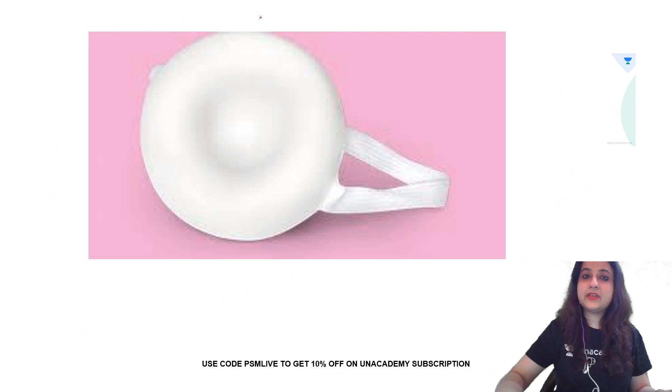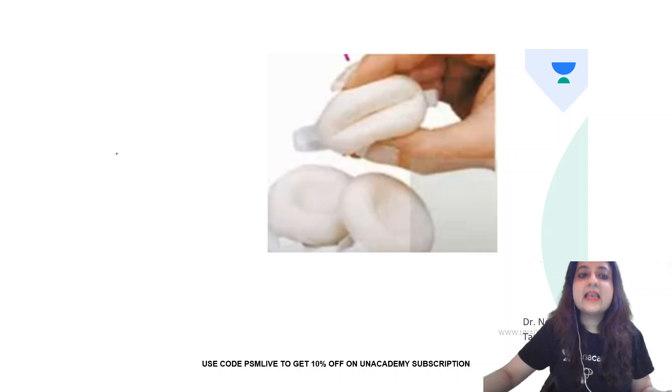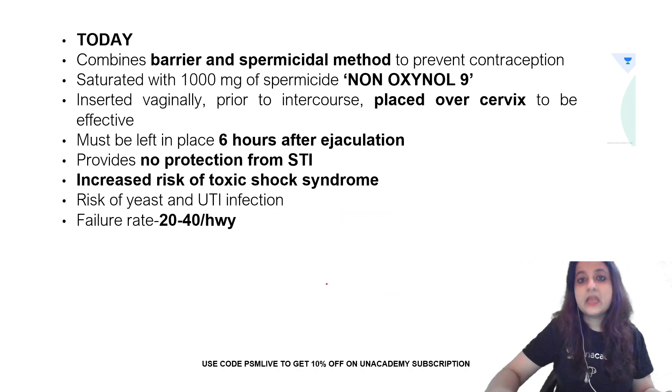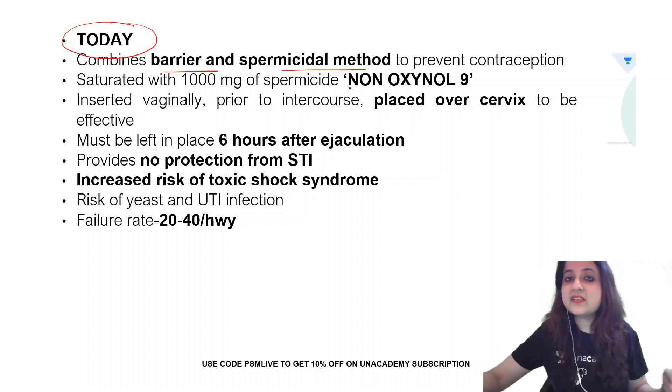Let's go to the next image for the day. What is this? This is asked in NEET PG also. This is a vaginal sponge. It is a barrier method of contraception and it includes a spermicide also. It comes by the name of Today. It combines barrier and spermicidal method to prevent contraception. The spermicide is nonoxynol-9. It is inserted vaginally, prior to intercourse, placed over the cervix. Must be left in place 6 hours after ejaculation. Max, you can leave up to 24 hours. Beyond this, if you forget to take it out, it leads to toxic shock syndrome.